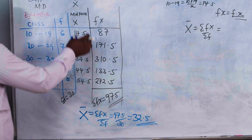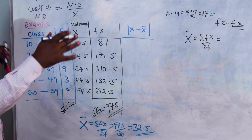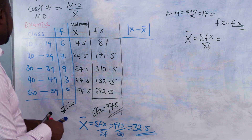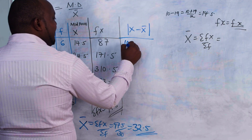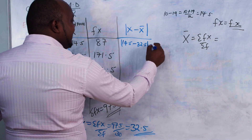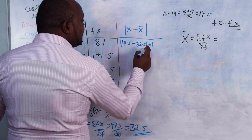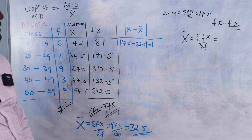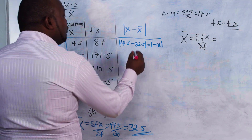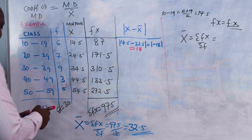Now we need the column for |x − x̄|. For the first class: |14.5 − 32.5| = |−18| = 18. For the second: |24.5 − 32.5| = |−8| = 8. Absolute value means if it is negative, we ignore the sign. For 34.5 − 32.5, the absolute value is 2.